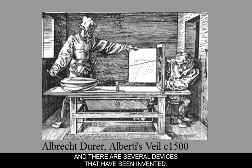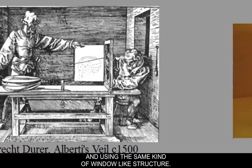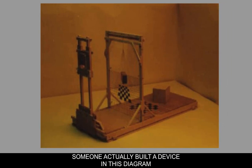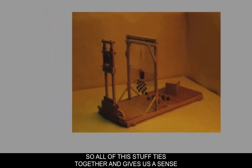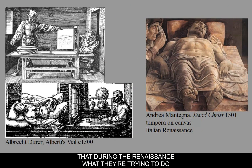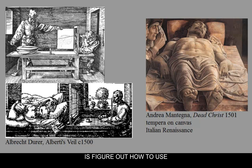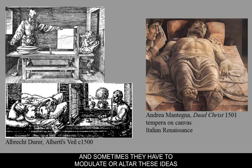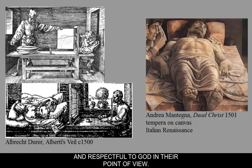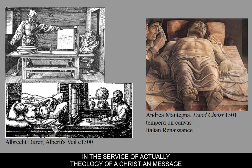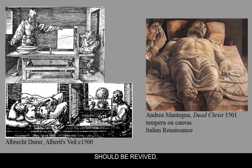There are several devices that have been invented. Dürer does another instance of this using a lute and mandolin with the same kind of window-like structure. Someone actually built a device that emulates that. All of this ties together and gives us a sense that during the Renaissance, what they're trying to do is figure out how to use linear perspective to give you a better experience and convey ideas more convincingly. Sometimes they have to modulate these ideas to be respectful to the viewer and to God. They use these special effects in the service of theology and a Christian message, even while believing that the classical past should be revived.